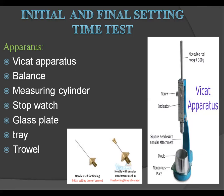Now let's see the required apparatus. We require the Vicat apparatus — you can see it in these pictures. We also require a weighing balance machine, a measuring cylinder, a stopwatch, glass plates, a tray, and a trowel. You can also see in these pictures the two different needles: the first needle is used for the initial setting time test, and the second one is a needle with an annular attachment used for the final setting time test.